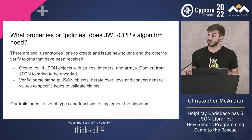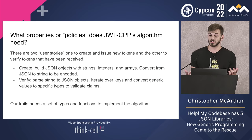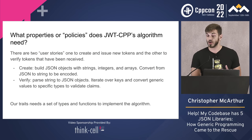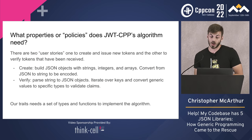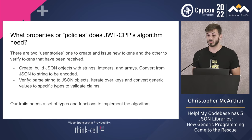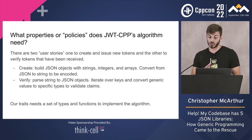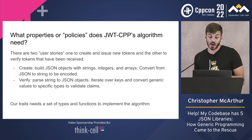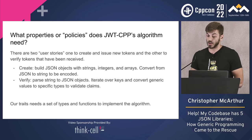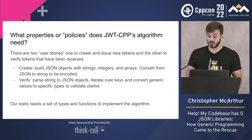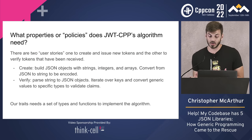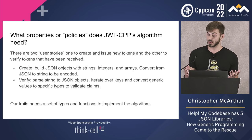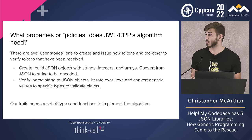There are two real user stories when implementing JSON Web Tokens: creating and verifying them. To create one, you build the JSON objects with predefined types — we only work with strings, integers, and arrays. To verify, you split the string, iterate over the keys, and validate specific ones. Our traits needs a set of functions to do the conversions, and some types that it needs to know how to work with.